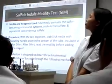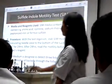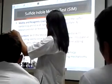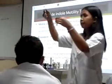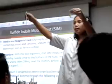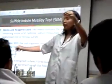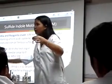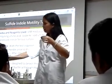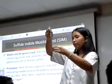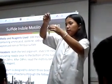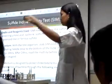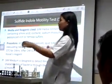Do you have the SIM media? For SIM, you stab the media once all the way to the bottom of the tube. Get your organism and then you stab once. So for SIM, once only. Stab only once.